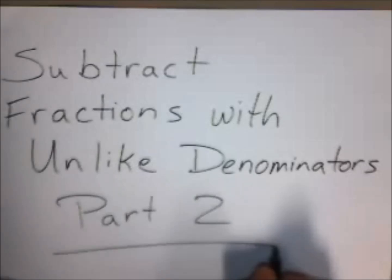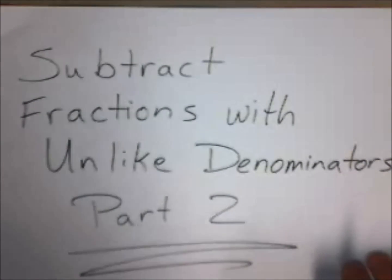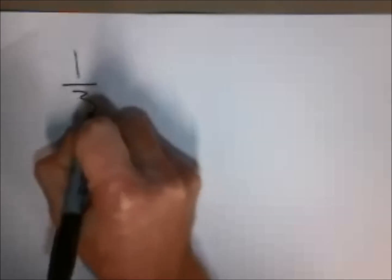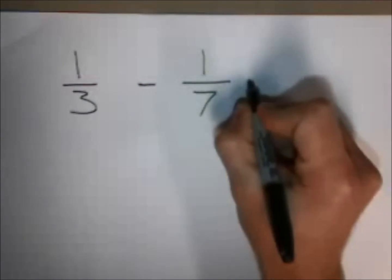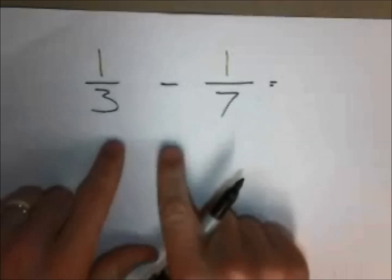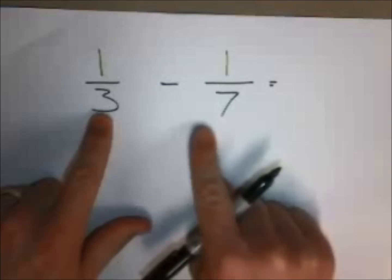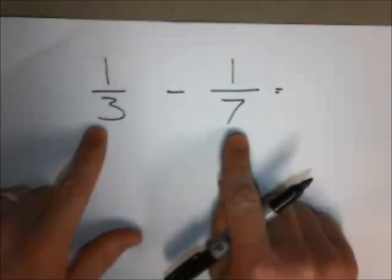Part two. All right, welcome back everybody to part two of subtracting fractions with unlike denominators. What we're going to do with this problem today is take a look at 1/3 take away 1/7. In class, what we notice is that we cannot subtract these from each other because they do not have like denominators.